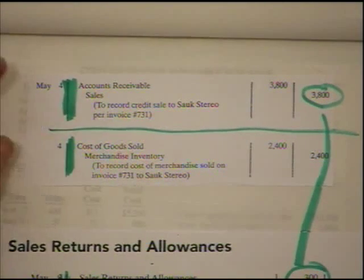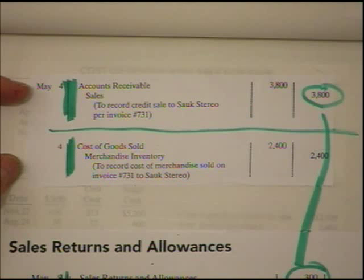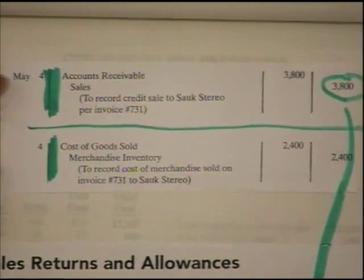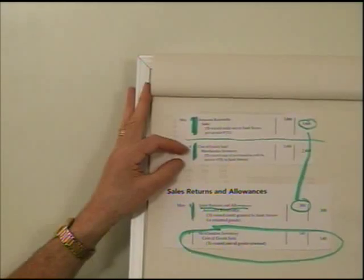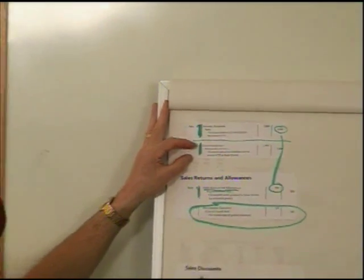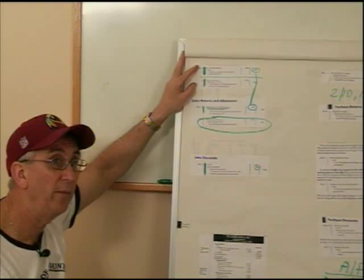We have a double entry like this that we have to make every single time we have a sale, because this is the perpetual inventory system, which means that as we sell the goods, we keep the running tab on inventory by removing it when we sell it.